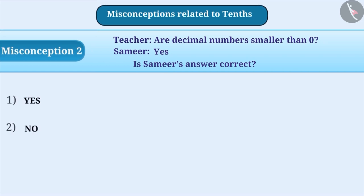Many times, there is a misconception that decimal numbers are smaller than 0. With this understanding, Samir's answer is considered to be correct and option 1 is incorrectly chosen as the answer.